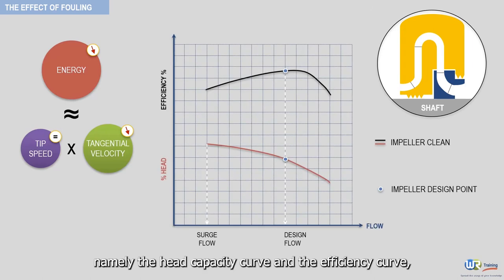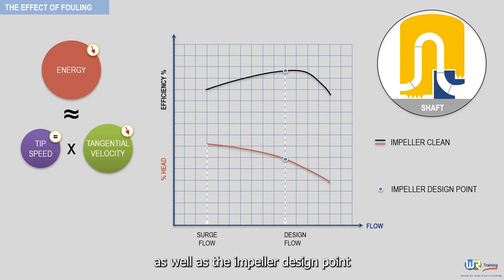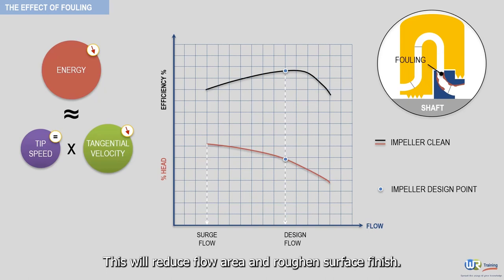This includes the impeller design point and low flow limit or surge limit. Impeller fouling is the accumulation of material in the impeller passages as depicted here. This will reduce flow area and roughen surface finish.